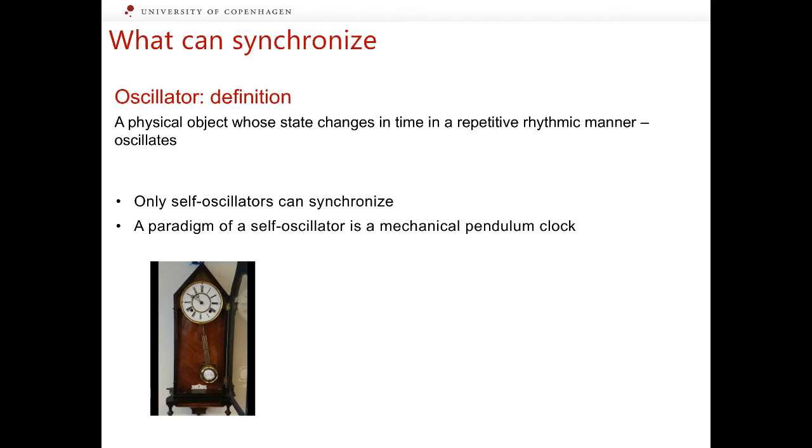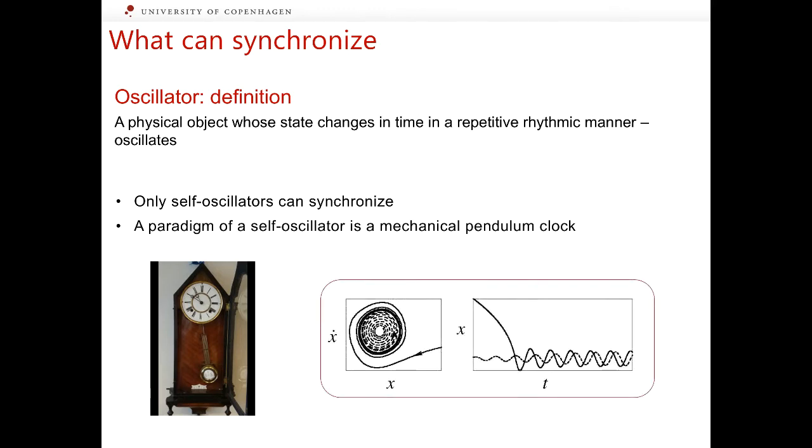A famous paradigm of a self-oscillator is a mechanical pendulum clock. On the right-hand side, you can see two phase portraits and two solutions of equations that describe the behavior of the angle of the pendulum in this clock in the course of time. This self-oscillator has the simplest oscillatory attractor, the limit cycle.